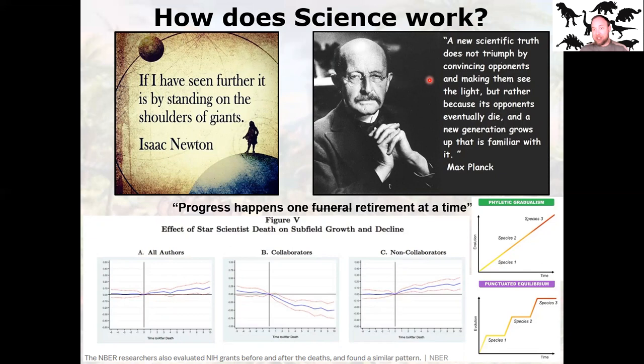A more pessimistic, cynical view — attributed to Planck — is that progress happens one funeral at a time, or let's say one retirement at a time. 'A new scientific truth does not triumph by convincing opponents and making them see the light, but rather because its opponents eventually die and a new generation grows up that is familiar with it.' The original dinosaur cladogram has 130 years of research behind it, firmly entrenched with researchers who went to grad school using that model and built their careers on it.